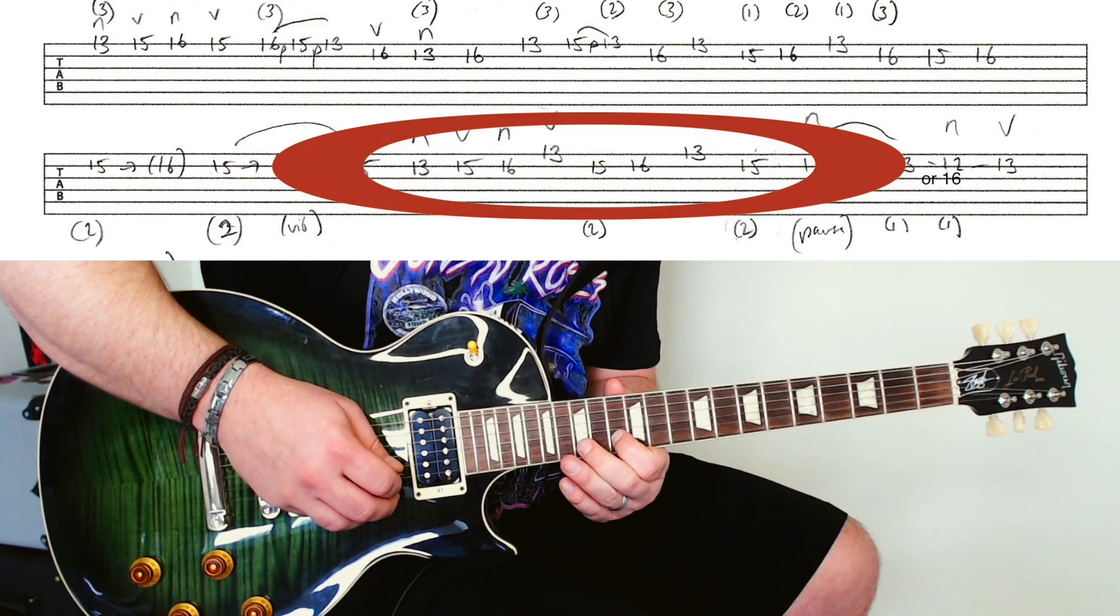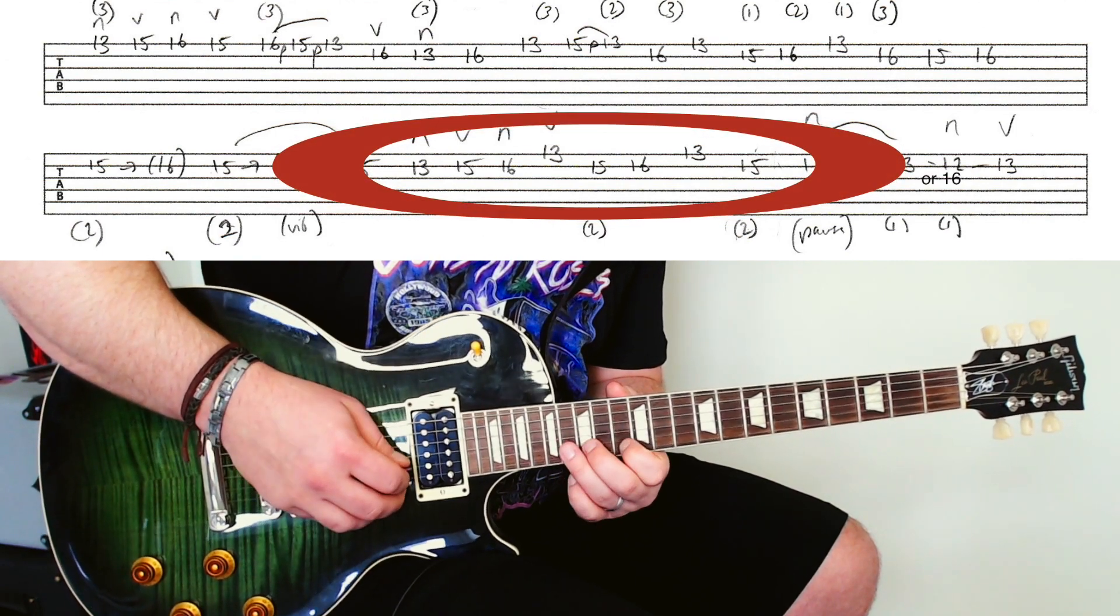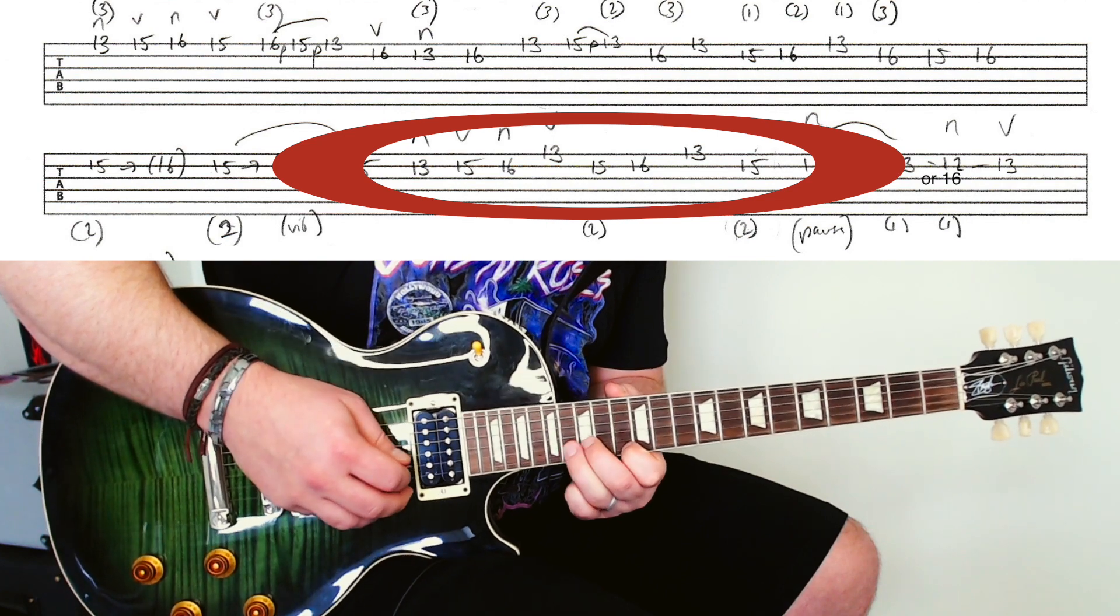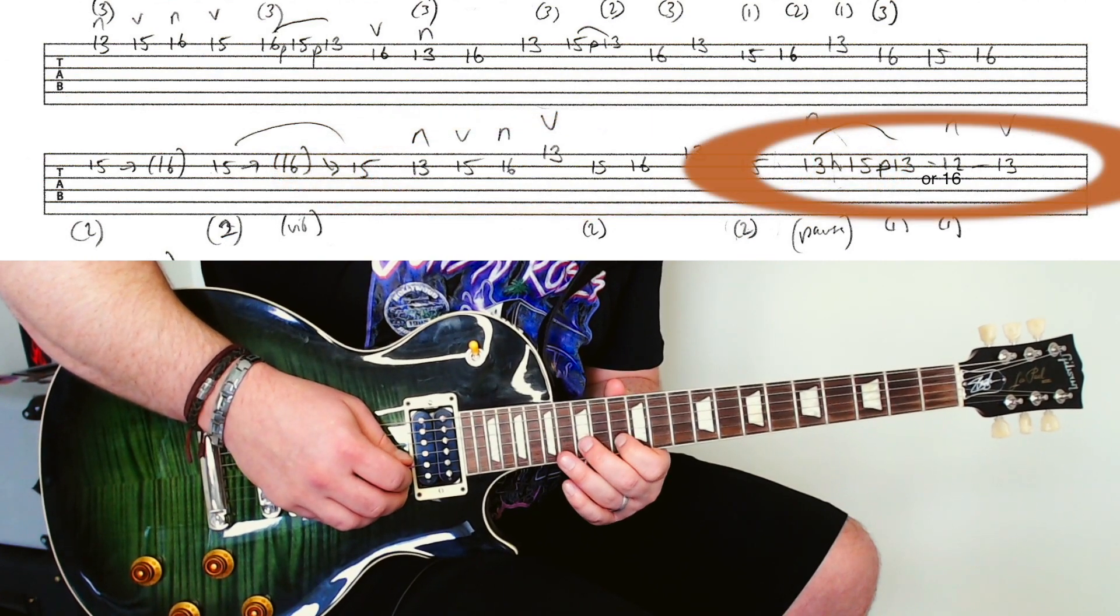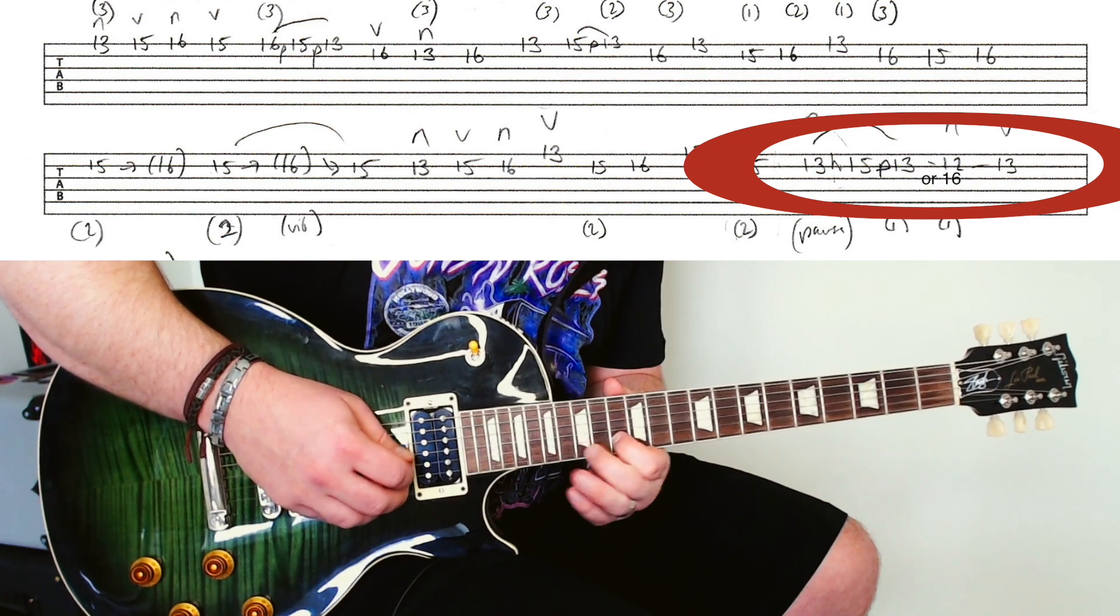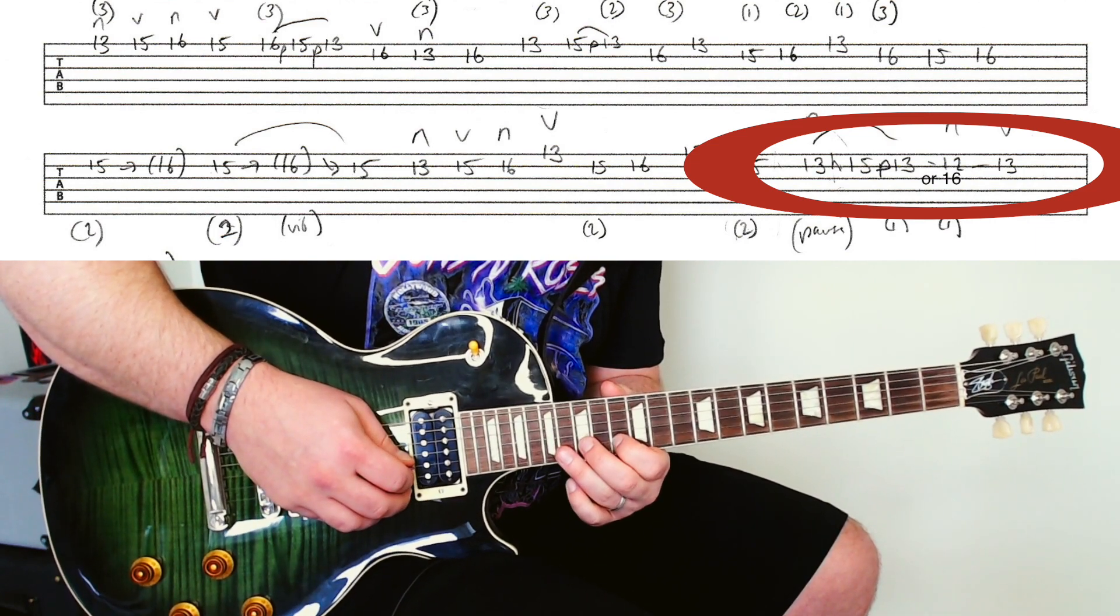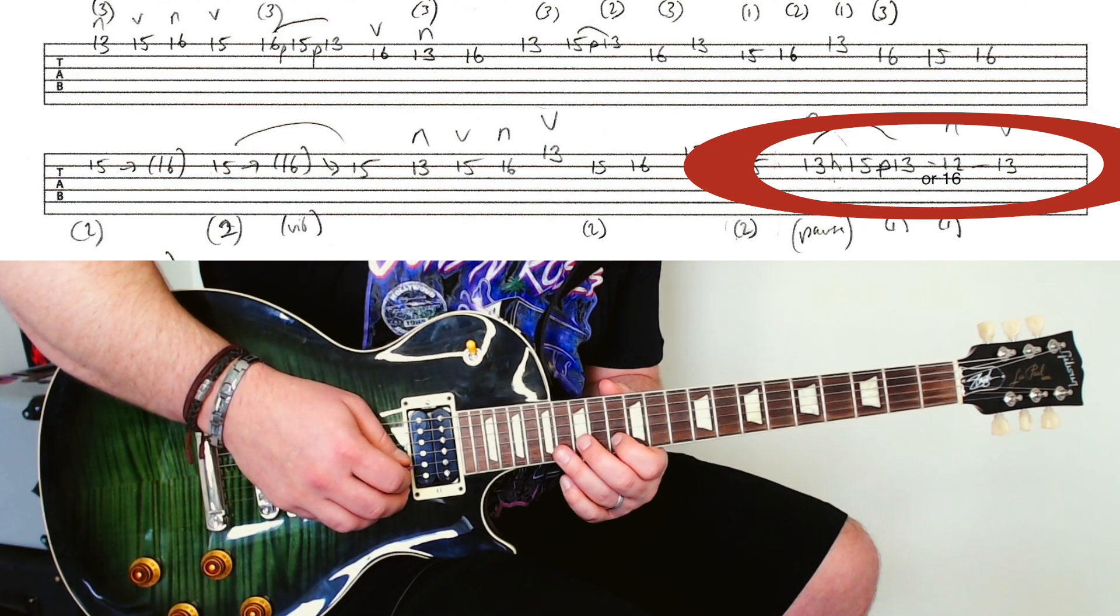Vibrato. The little scale. Pull-offs here and hammer-ons. Now you can slide down here, or you can do a 16th fret across. I get a feeling it's the 16th fret across, but there's two options for you there.